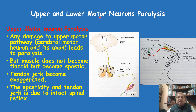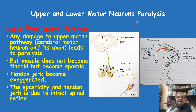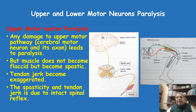The paralysis due to the upper motor neuron is absolutely different from that of the lower motor neuron. By testing the patient, you can say whether the patient is suffering from upper motor neuron type of paralysis or lower motor neuron paralysis — meaning you can determine where the defect actually is: whether in the cerebrum or its path, or in the spinal cord or spinal nerve.